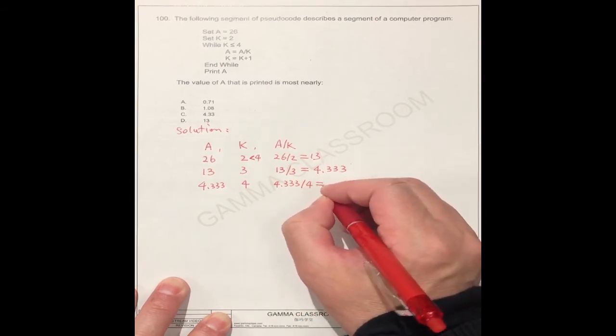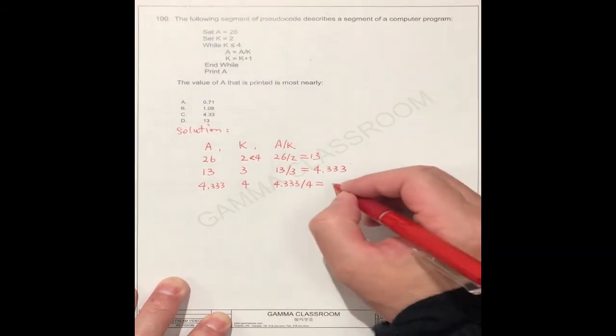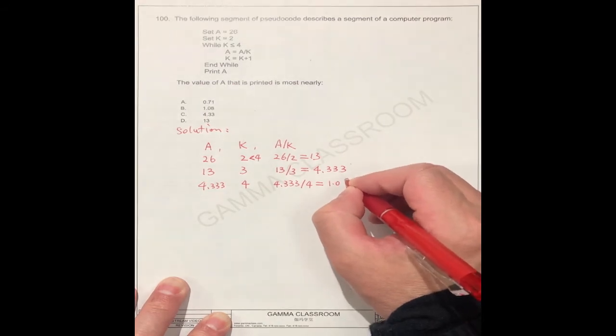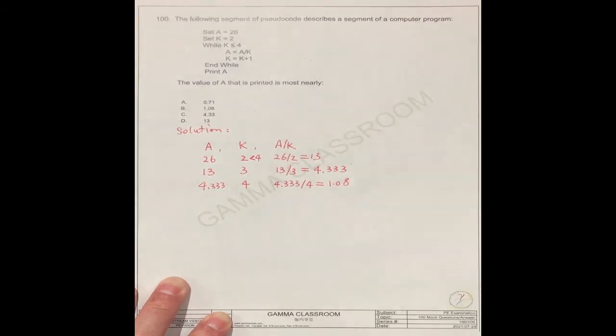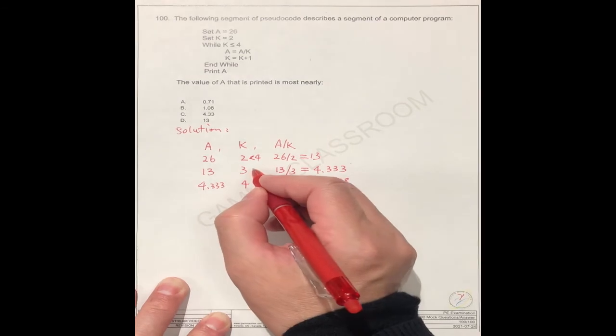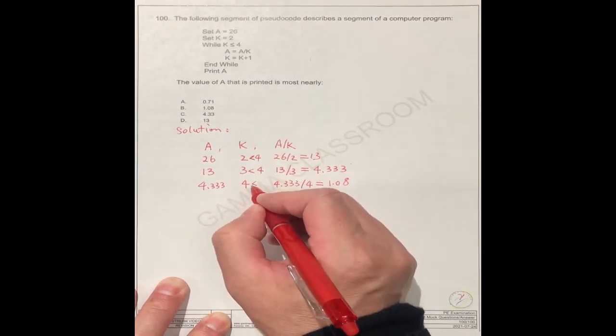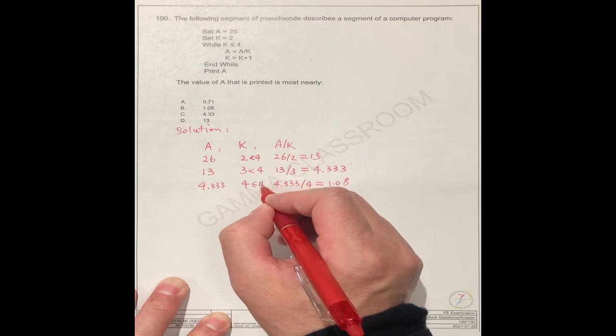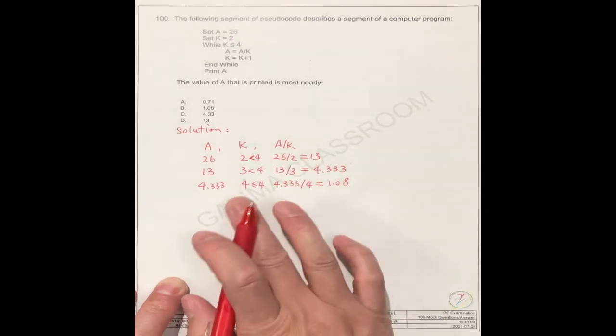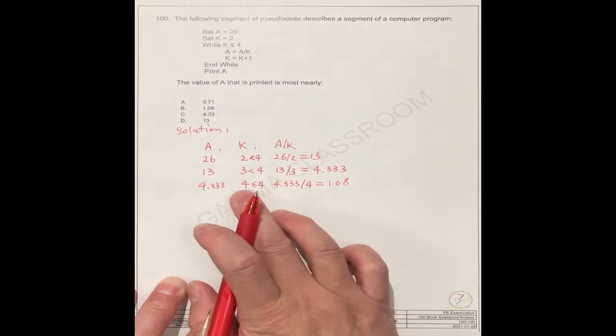This is equal to what number? It's 1.08, because you see this is less than 4. This is equal to 4, right? This is the last, you see this is the last one.